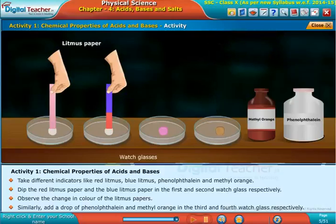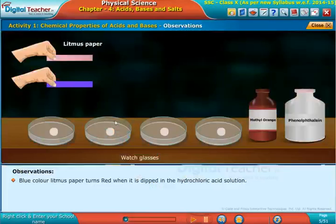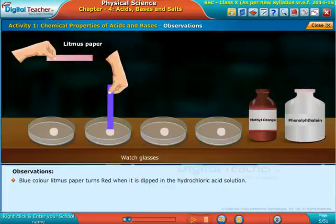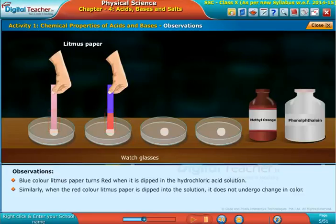Blue color litmus paper turns red when it is dipped in the hydrochloric acid solution. Similarly, when the red color litmus paper is dipped into the solution, it does not undergo change in color.